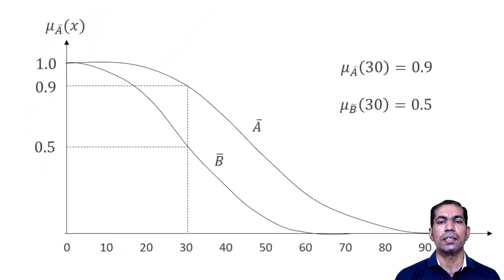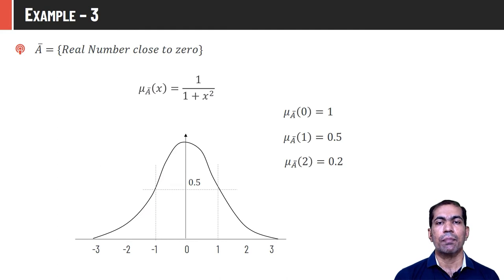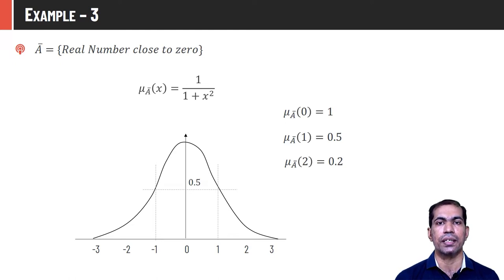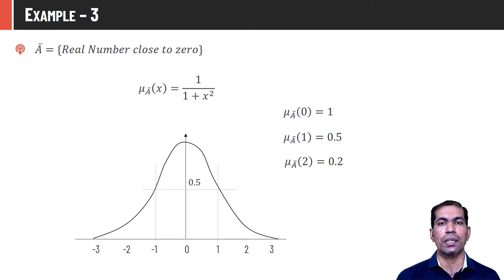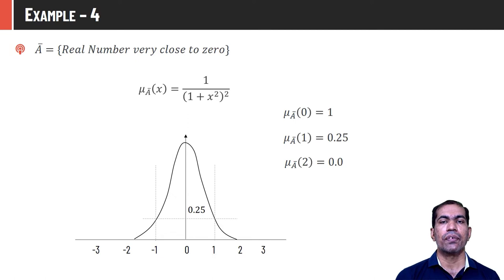For 'very young' with age range 0 to 60, the same person of age 30 has membership value 0.5. For Ā = 'real numbers close to 0,' the membership function is μ_Ā(x) = 1/(1 + x²). Substituting x = 0 gives membership 1; x = 1 gives 1/(1+1) = 0.5. By changing the property to 'very close to 0,' the membership function becomes μ_Ā(x) = 1/(1 + x²)², making the decay sharper — x = 1 now gives 0.25 instead of 0.5.